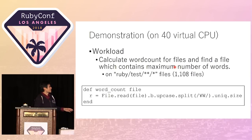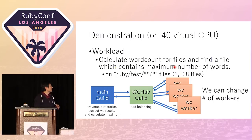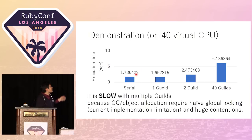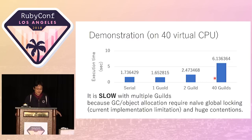The last demonstration is a word count example. We use a master-worker model with Guild. The result is very, very slow with 40 Guilds — the y-axis is execution time, so higher is bad. Serial execution requires only 1.7 seconds, but with 40 Guilds it requires 6 seconds, which is a very bad result. This is because GC object allocation requires naive locking in the current implementation. This is a current implementation limitation — we need to improve it, and we can solve this slowdown.